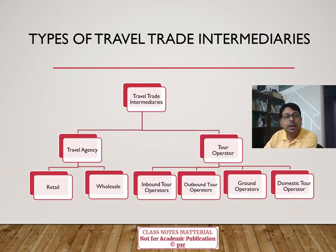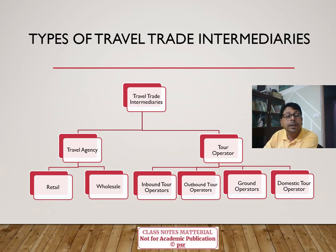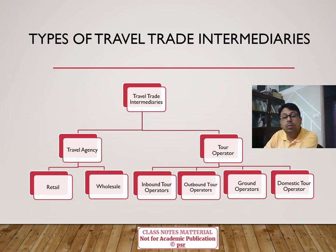The types of travel and trade intermediaries in the tourism industry are mainly divided into two categories: travel agencies and tour operators. Travel agencies are further divided into retail travel agencies and wholesale travel agencies, while tour operators are generally divided into four parts: inbound tour operators (IBT), outbound tour operators (OBT), ground operators, and domestic tour operators.